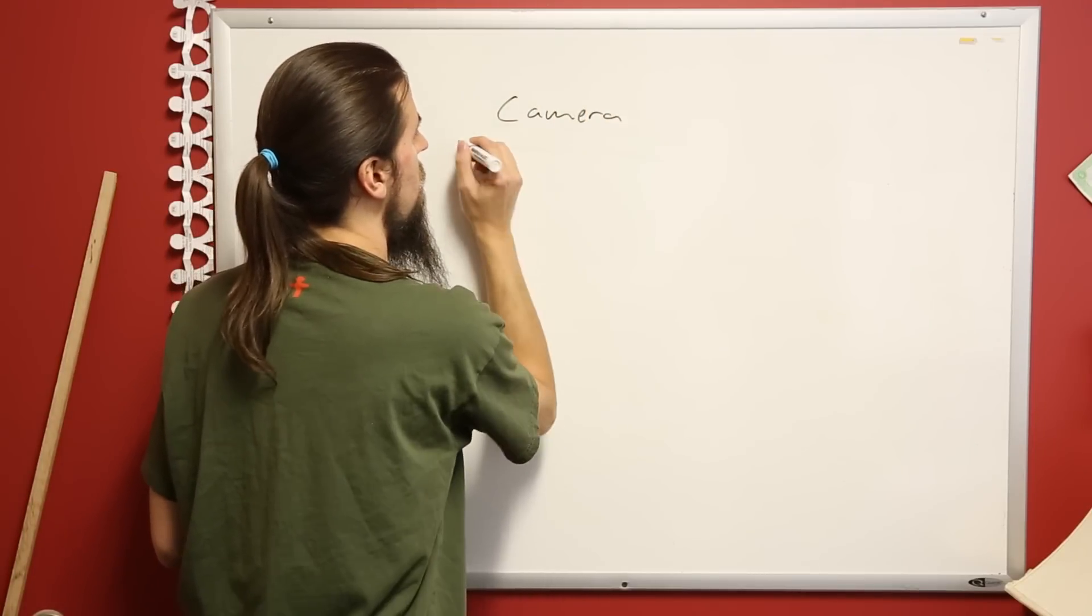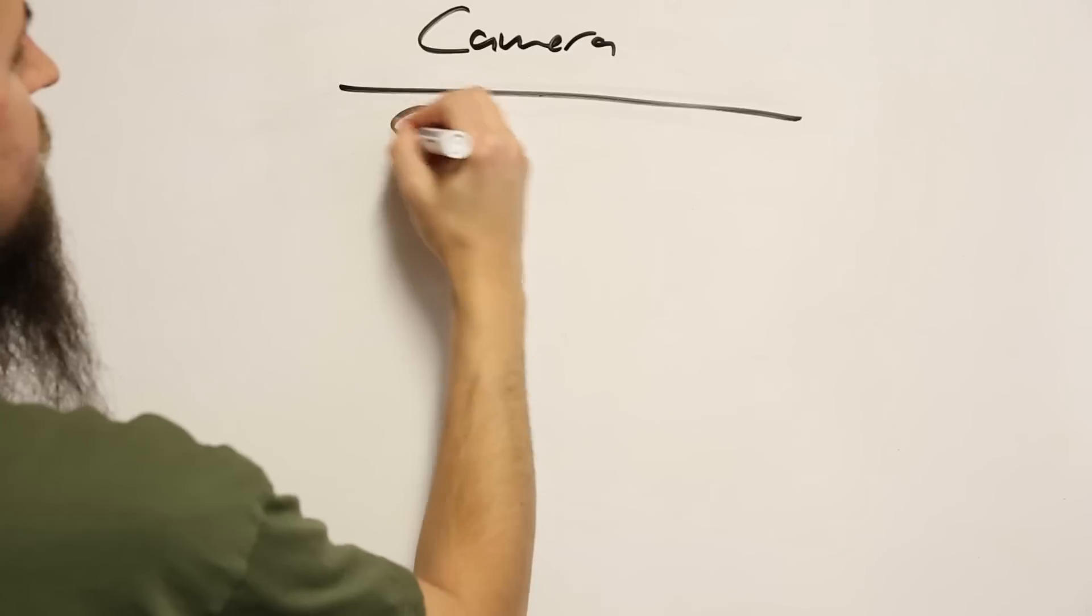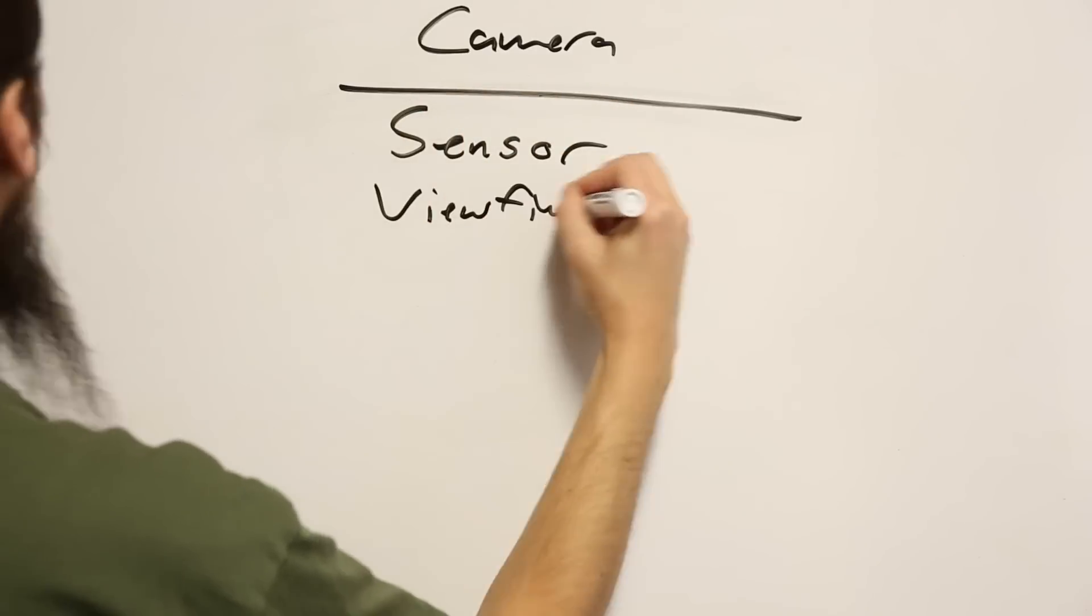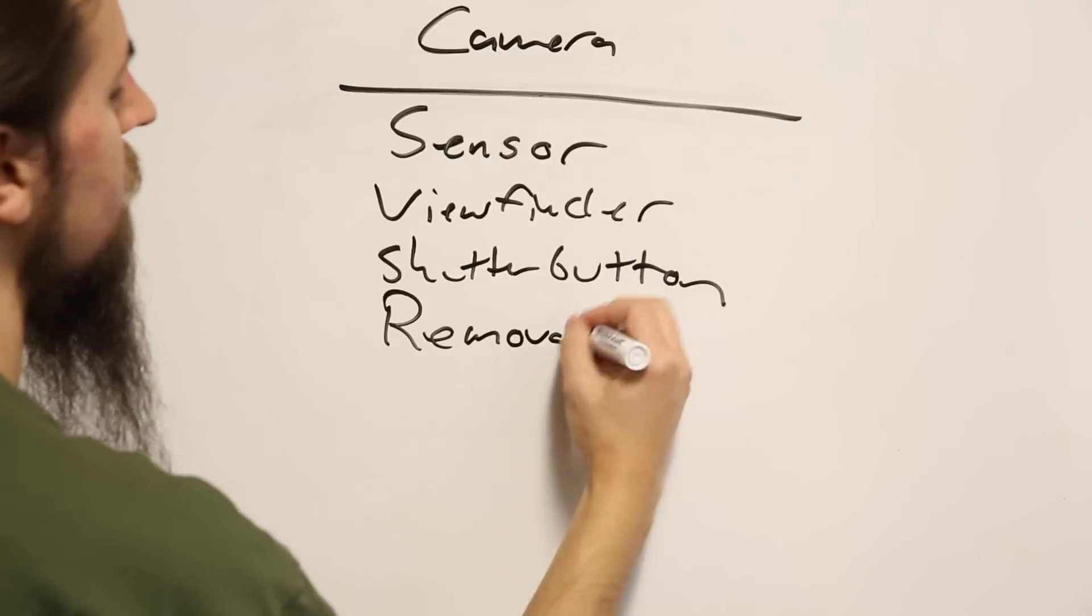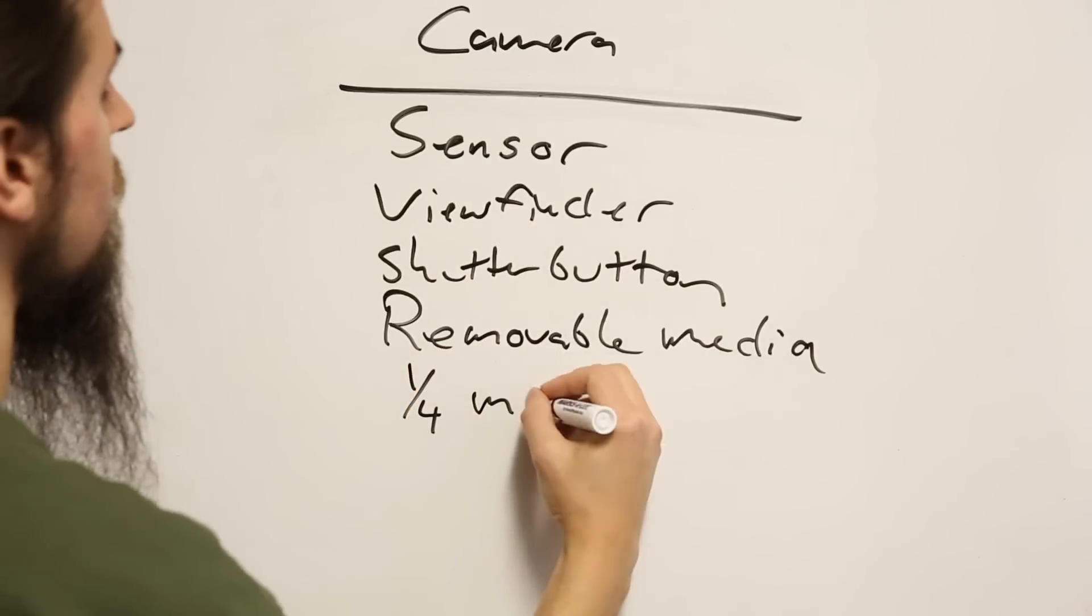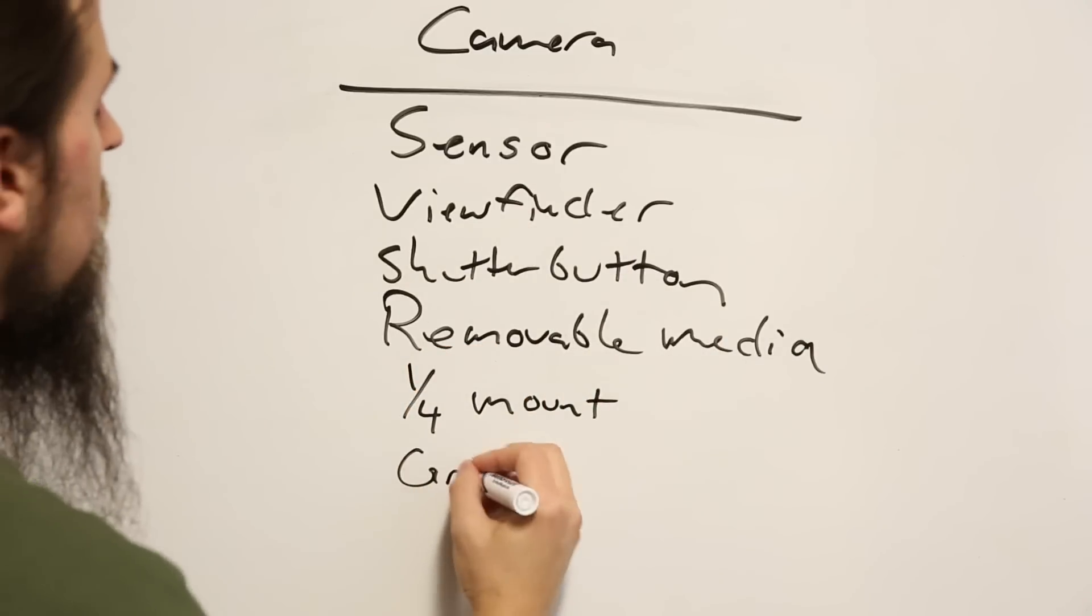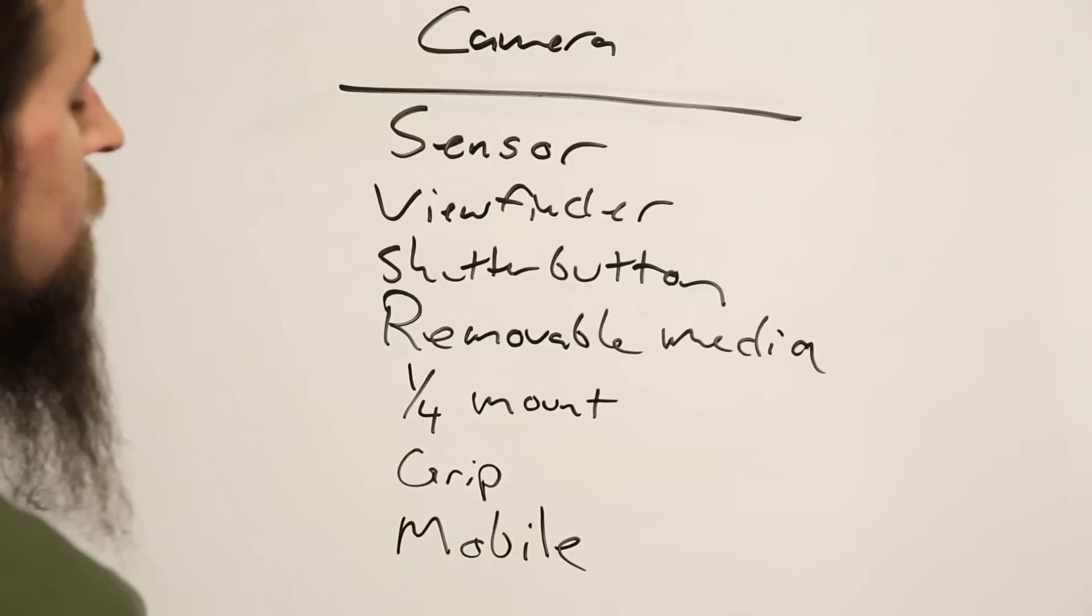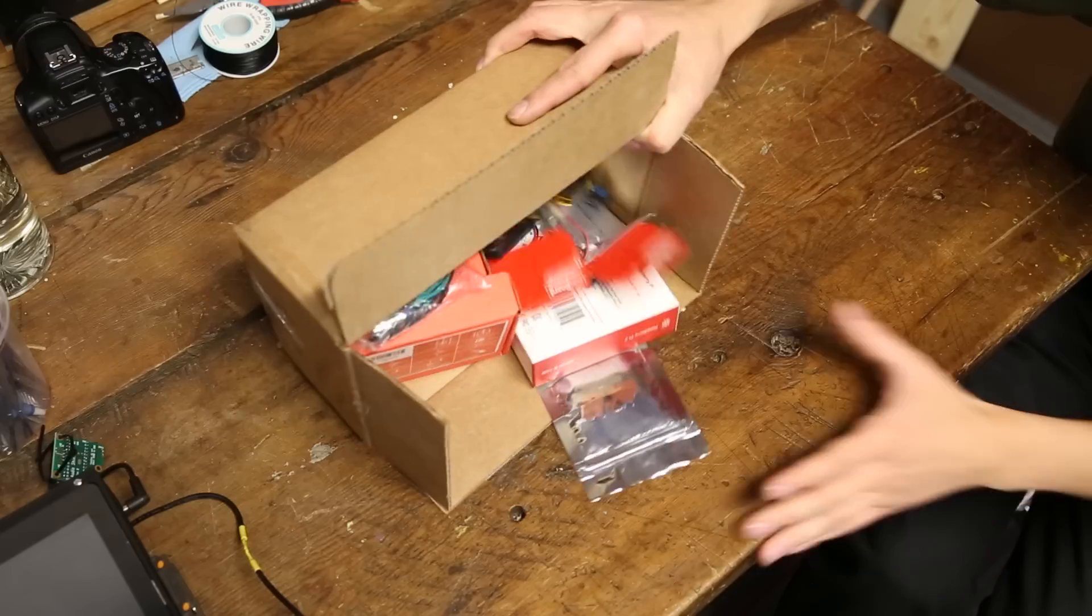We'll need an image sensor, a viewfinder, shutter button, removable media, a fancy grip, and it will need to be mobile. With our needs identified, let's look at the parts we have.